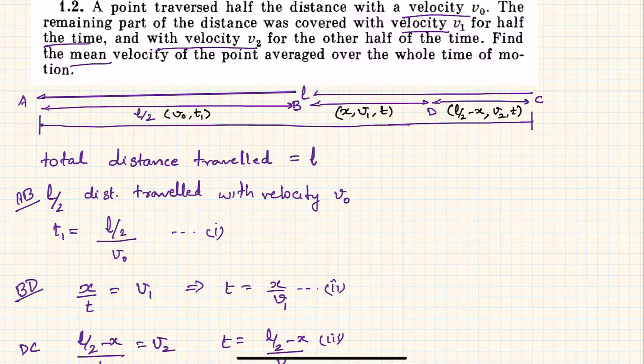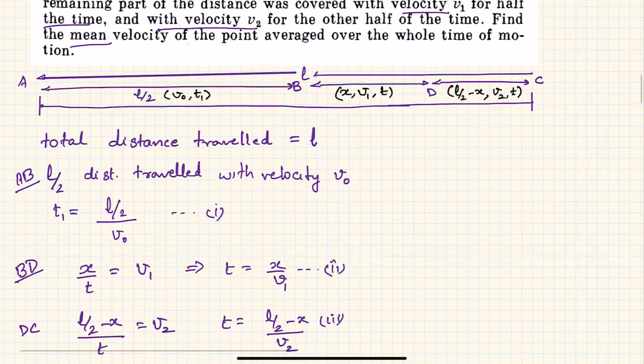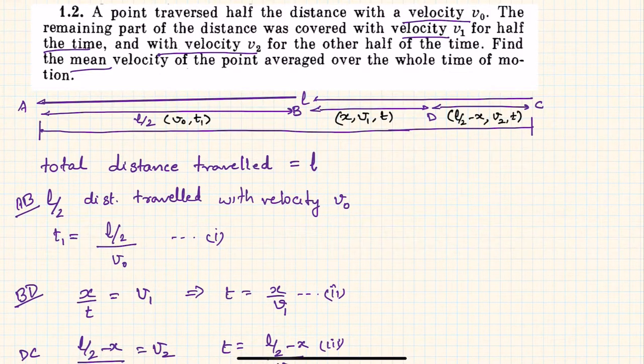I have drawn a representative diagram over here if you can see. So A to C is the distance traveled. B is exactly half the distance, so A to B is l/2